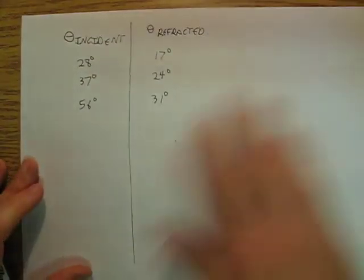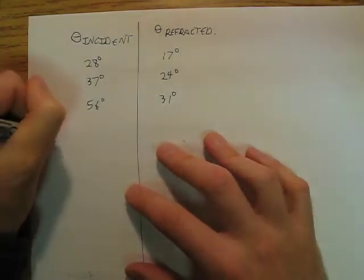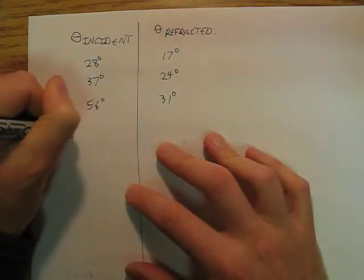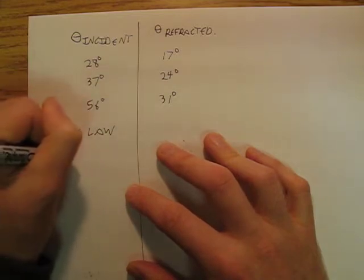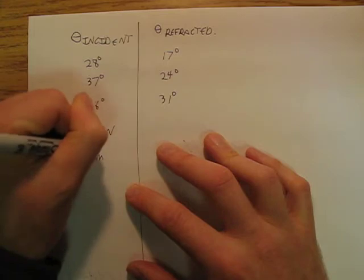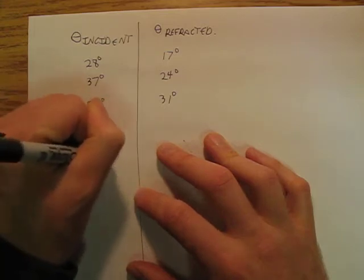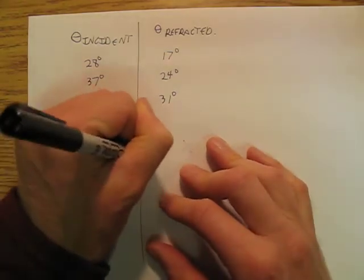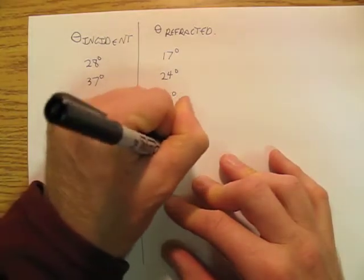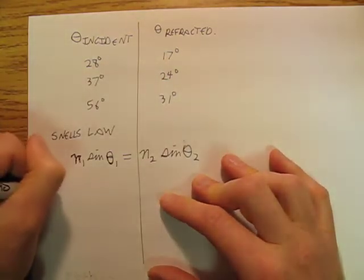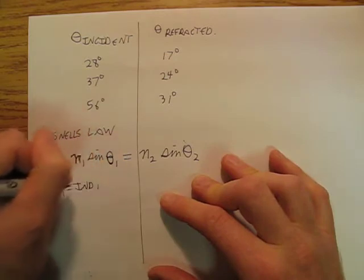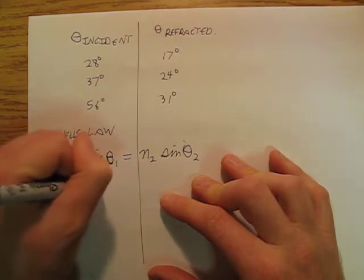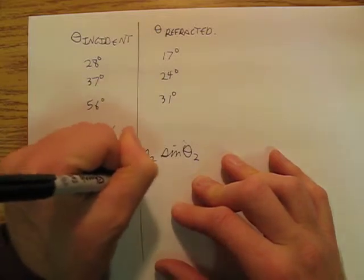And now we have Snell's Law, which says that N1 sine theta 1 is equal to N2 sine theta 2, where N1 is the index of refraction. Well, N is the index of refraction.